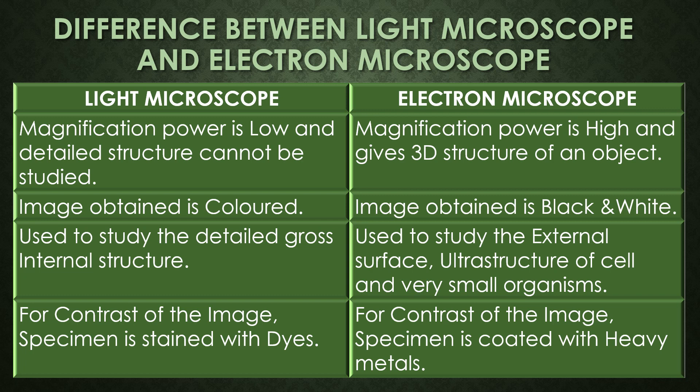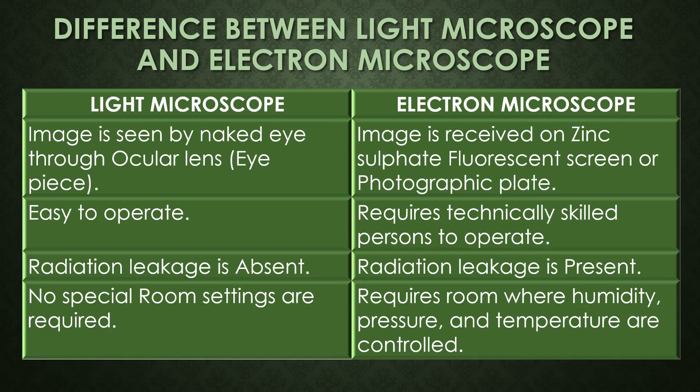In the light microscope, for contrast of the image, the specimen is stained with various dyes like acidic dyes, basic dyes, or neutral dyes. For the electron microscope, for contrast of the images, the specimen is coated with various heavy metals. Under the light microscope the image is seen by the naked eye through the ocular lens or eyepiece.